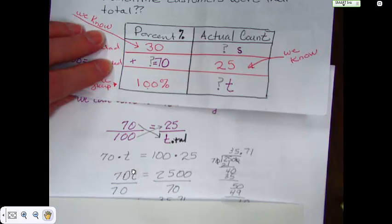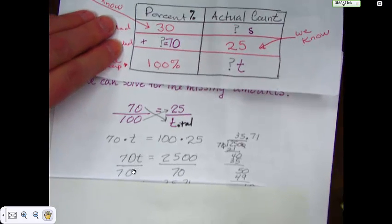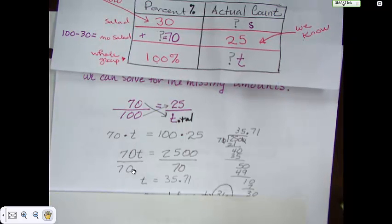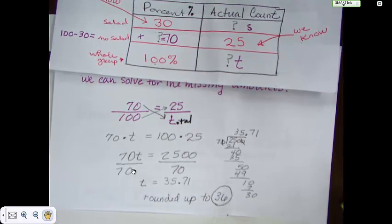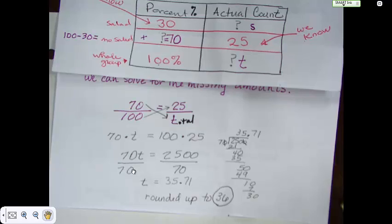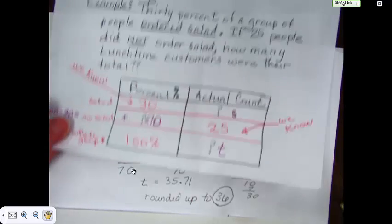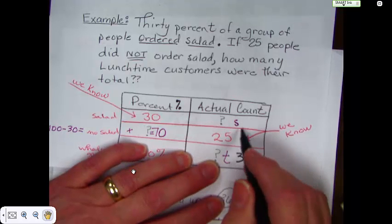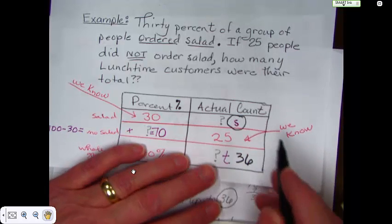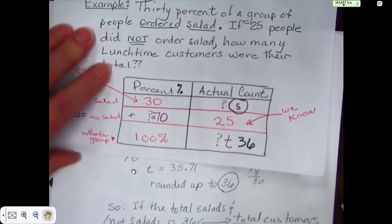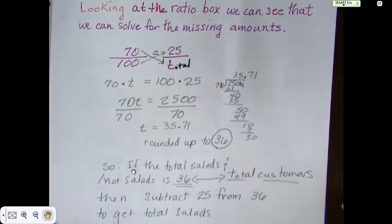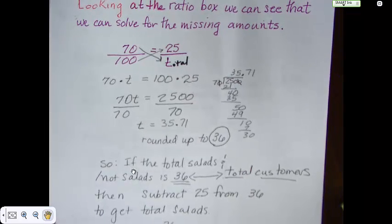Then we would divide both sides by 70, and we would end up with t equal to 35.71, which I would most likely round up to 36. Then we would be able to say that our total number now is 36. And to find our missing amount right here, we would just subtract the two.